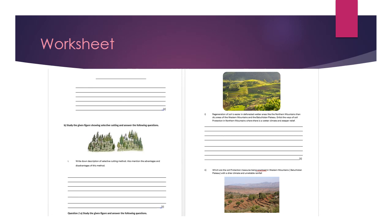Question two: study the given figure showing the selective cutting method and answer the following questions — write down the description of selective cutting and mention its advantages and disadvantages. Figure 4.21 on page 18 will be helpful. Question three: analyze the ways of soil protection in northern mountains where there is a better climate and steeper relief. Question four: identify the soil protection measures being practiced in western mountains and the Balochistan plateau with a dry climate and unreliable rainfall. Answer these questions from figure 4.23 on page 80 as well as the video lesson.